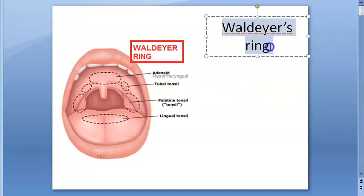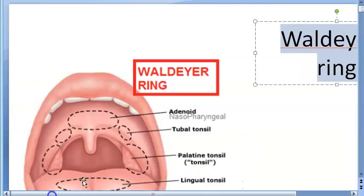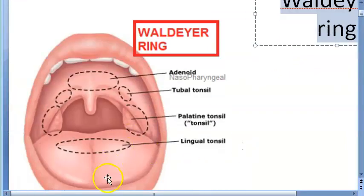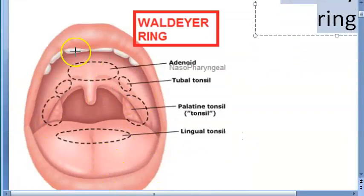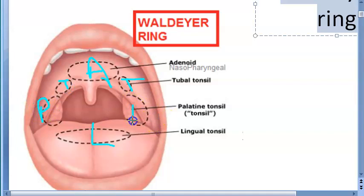In this video we want to look at what Waldeyer's ring is. In the mouth you have the adenoid tonsil, which is the nasopharyngeal tonsil. Down here you have the lingual tonsil, and bilaterally you have the tubal tonsils. You also have the palatine tonsils, or simply called tonsils. This is Waldeyer's ring.